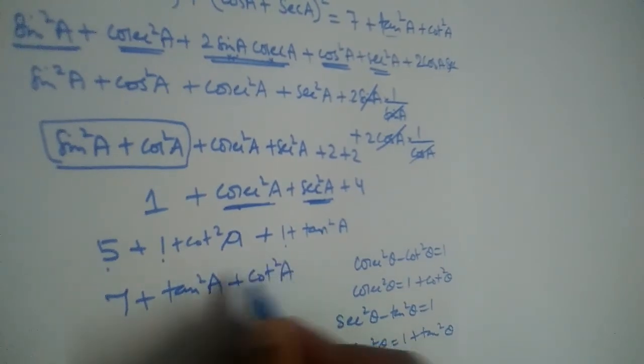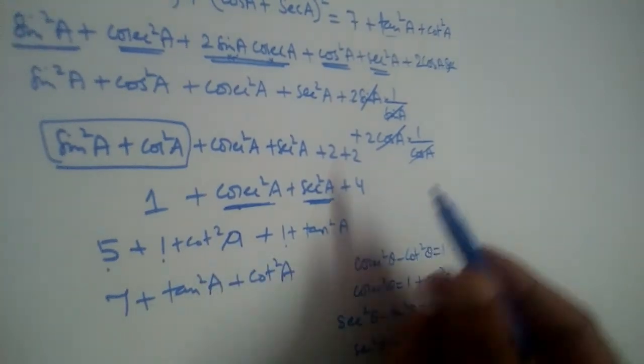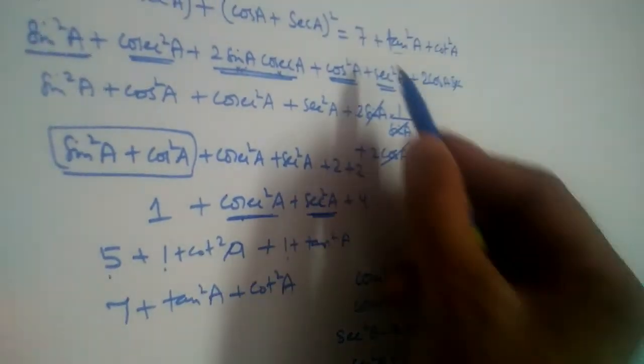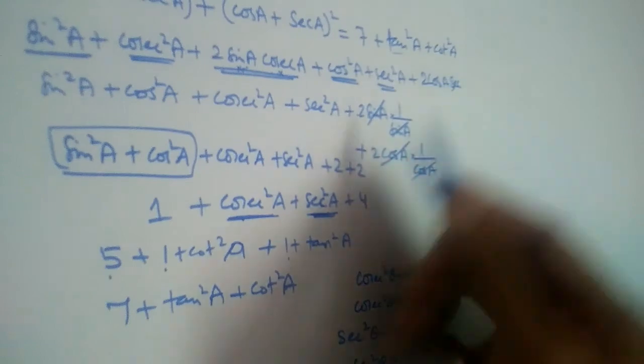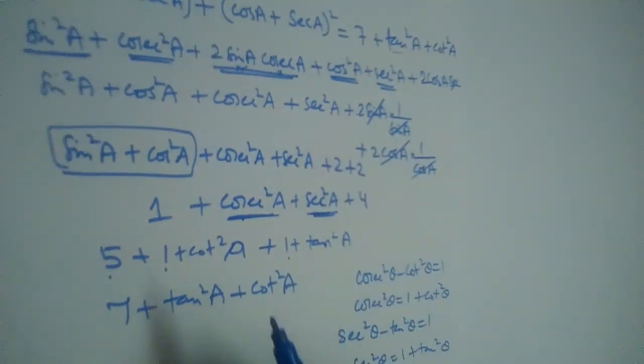So this equals 7 + tan²a + cot²a, which is exactly what we needed to prove.